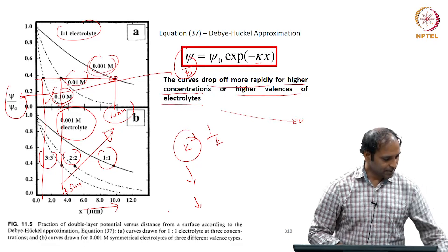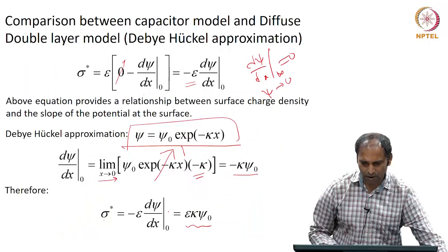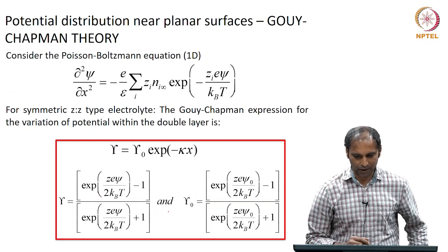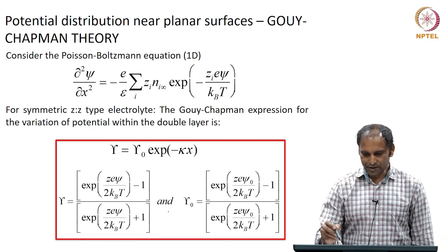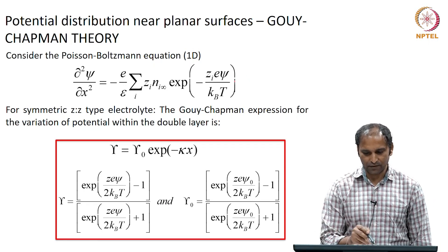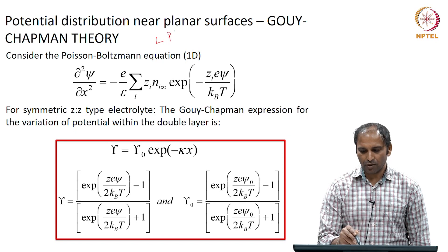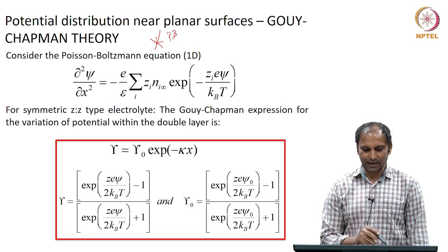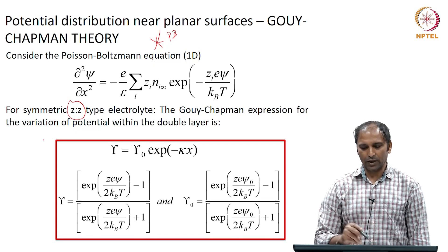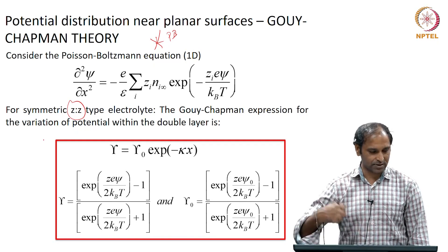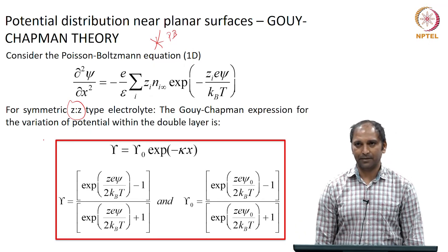Anyway, that is about what I wanted to cover today. In the next class we will look at a more general solution — instead of the linearized Poisson-Boltzmann equation, we will look at a more general case for a symmetric electrolyte and discuss how the potential varies with separation distance and its implications.